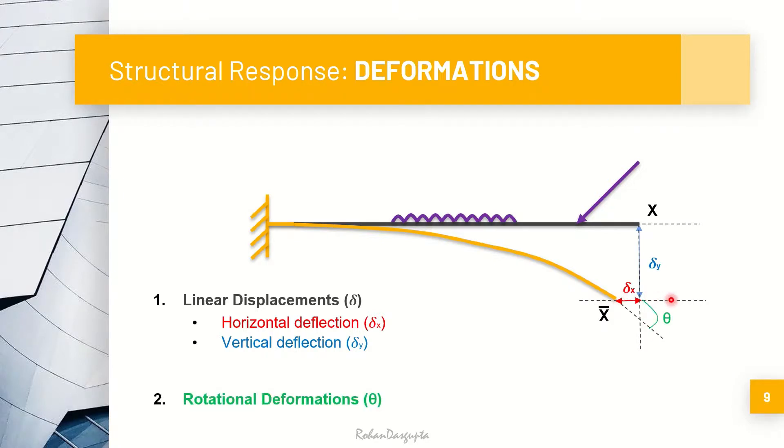This is called as the rotational deformation or here we are calling it as theta. The theta is shown in the clockwise direction. There may be cases where it is in the anticlockwise direction. Please remember that in a structure, there can be three types of deformations. One is linear deformation under which comes horizontal deflection and vertical deflection and rotational deformations.